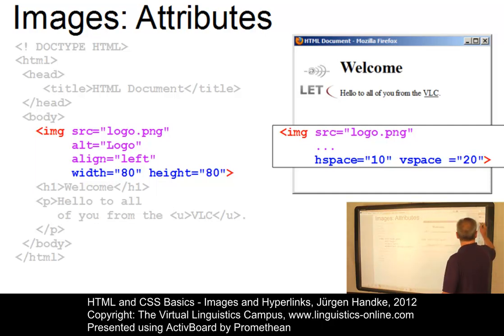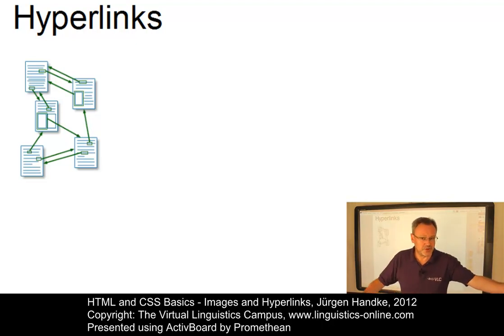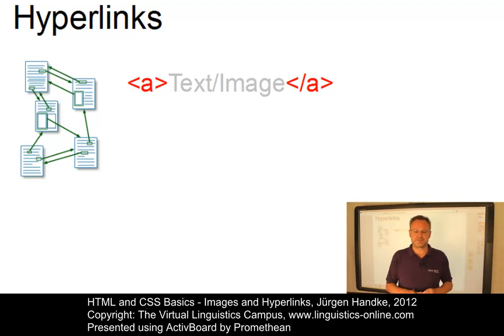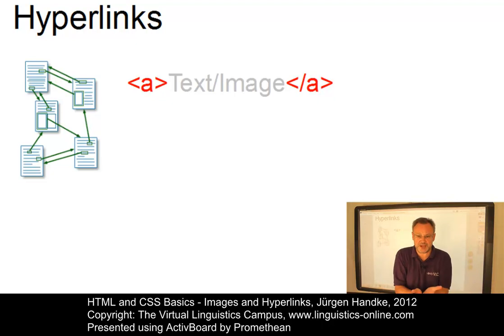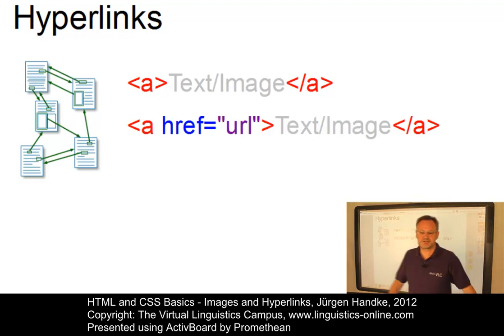So much for images — let's now move on to hyperlinks. Hyperlinks are pointers to another place inside the current document, to another document in the local collection on the same website, or to a document anywhere on the World Wide Web. The anchor tag, where A stands for anchor, is the HTML construct to build hyperlinks. It is a container tag whose start and end tags are wrapped around a span of text, turning it into a clickable link. With the attribute href, which stands for hyperlink reference, we specify which document is the target of our hyperlink.